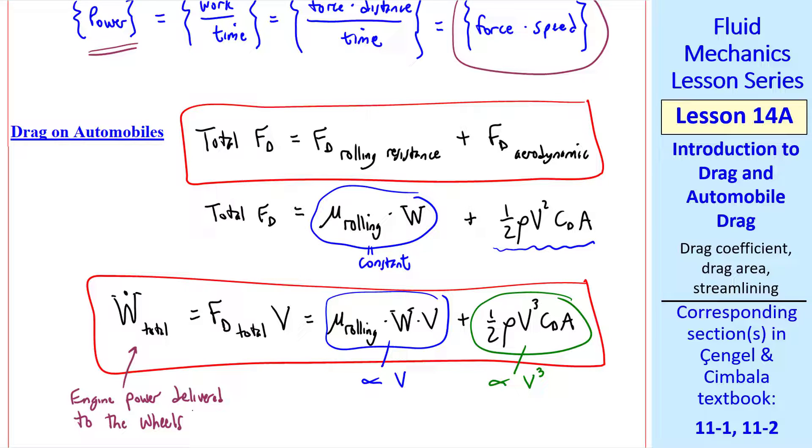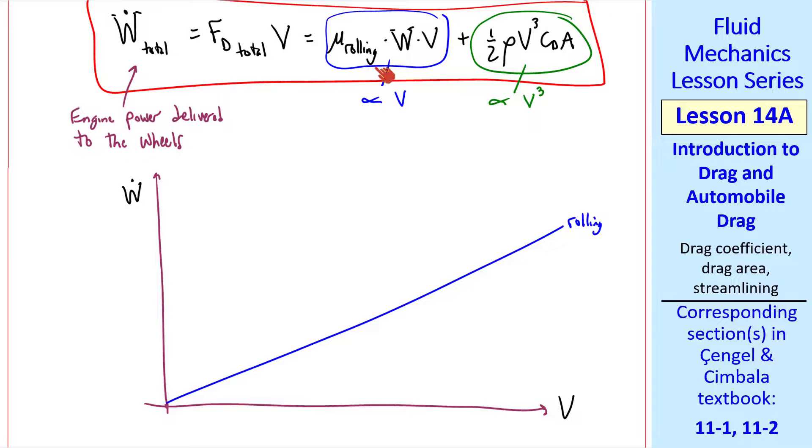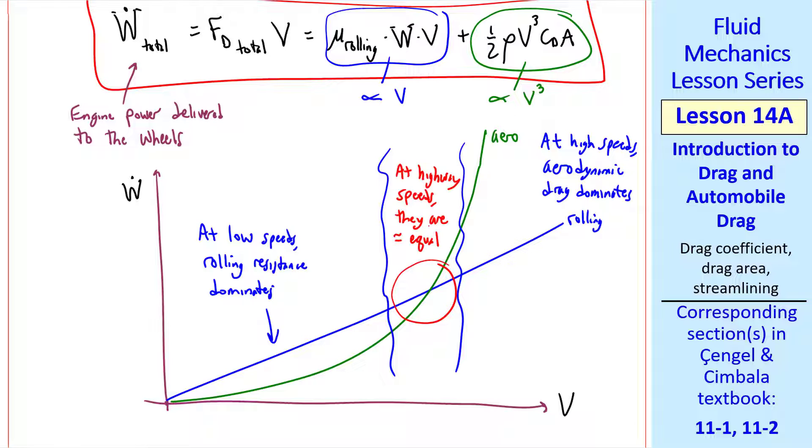This W dot total is the engine power delivered to the wheels. The actual W dot produced by the engine would be even greater than this, due to inefficiencies and losses such as in the transmission, friction in the axle, etc. Let's sketch W dot versus V for an automobile. The power required for the rolling resistance is linear, whereas the power to overcome aerodynamic drag goes like V cubed. At low speeds, rolling resistance dominates. At high speeds, aerodynamic drag dominates. But at some speed, these two curves cross.